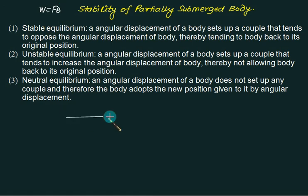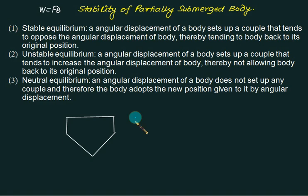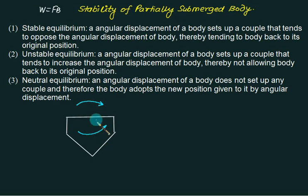The Archimedes principle is already applied. Let's consider a cross section — this is the front view of a ship. If we make an angular displacement in a clockwise direction, the body will have an anticlockwise moment. The external couple is cancelled by the body couple and the body comes back to the horizontal position. This is called stable equilibrium.